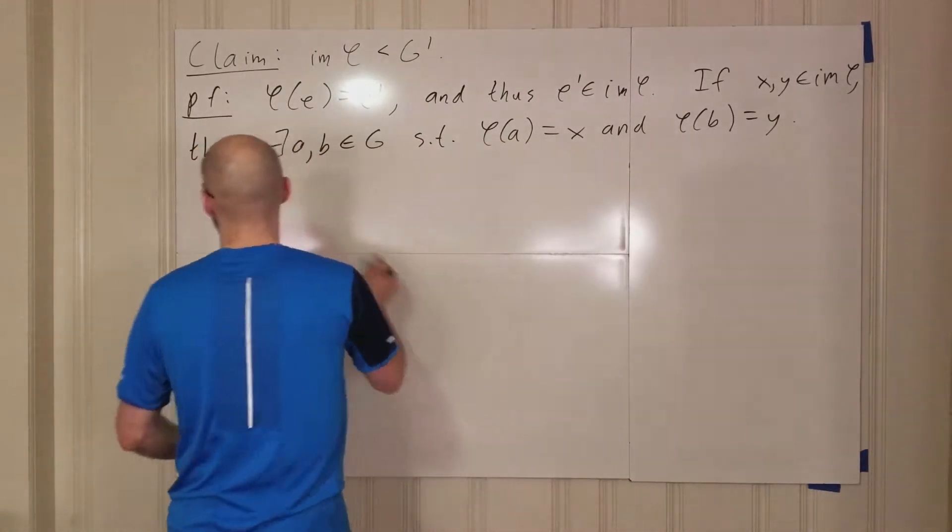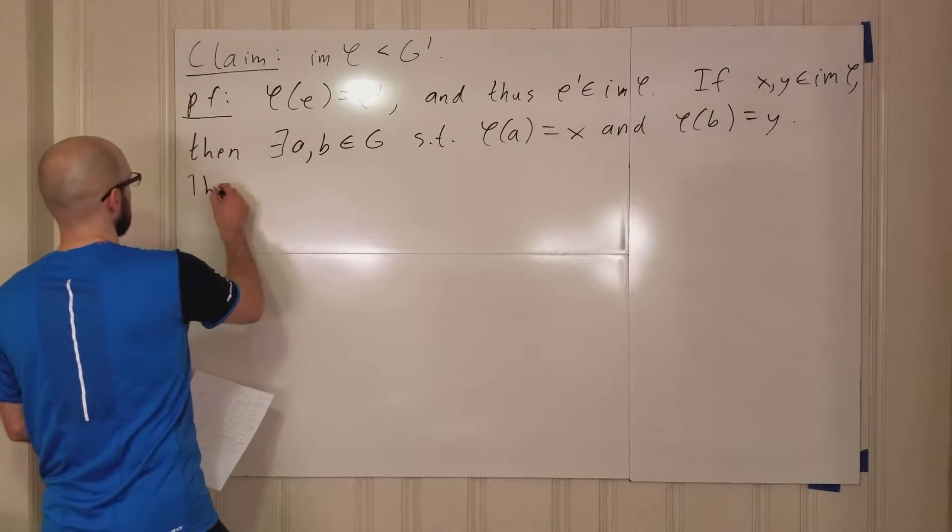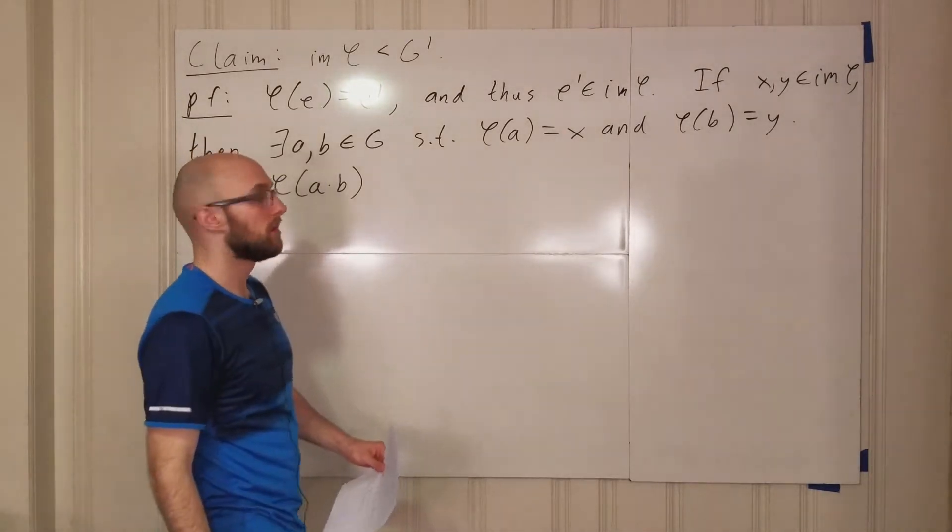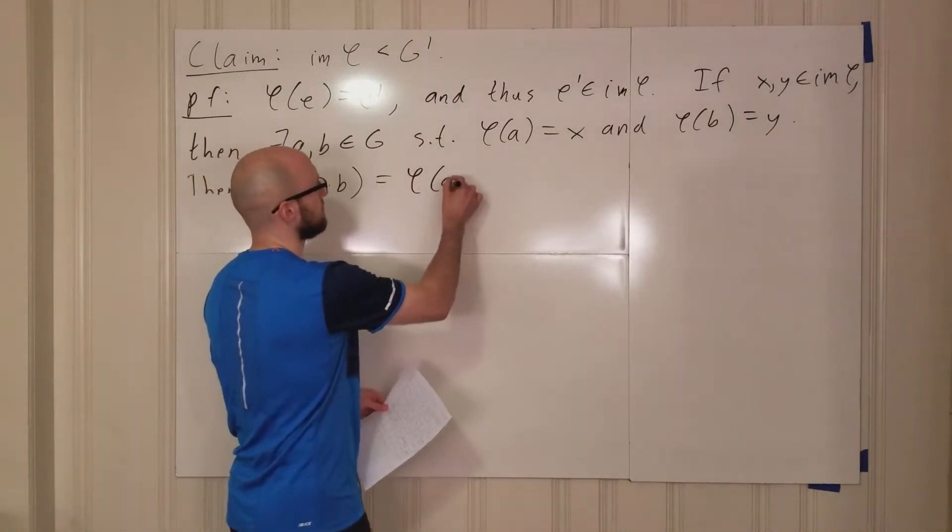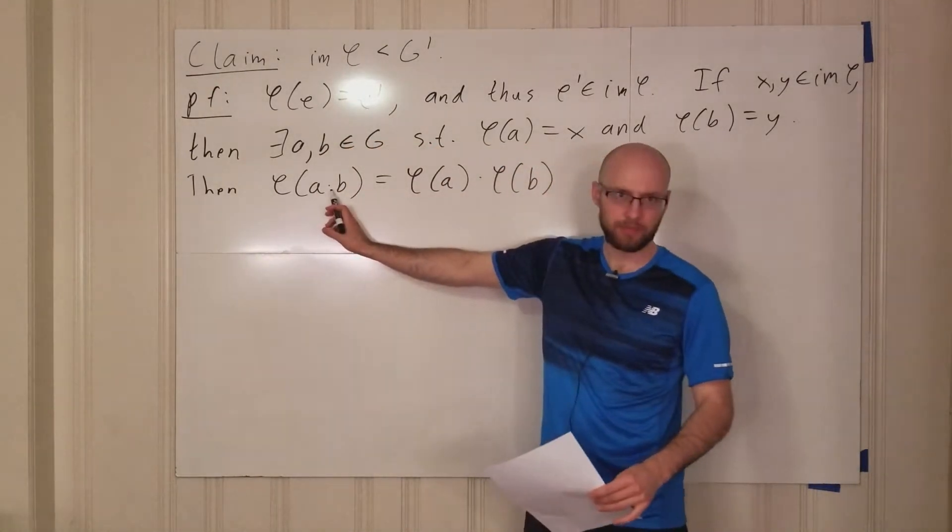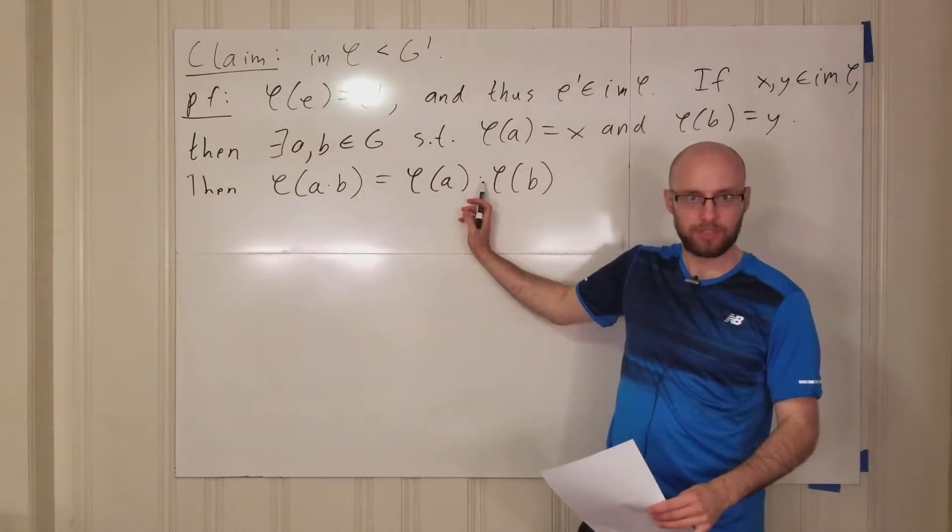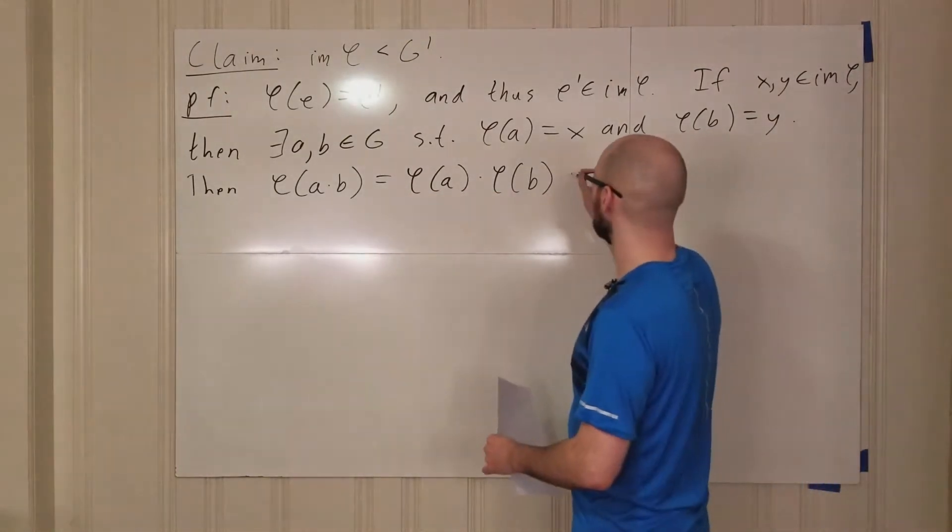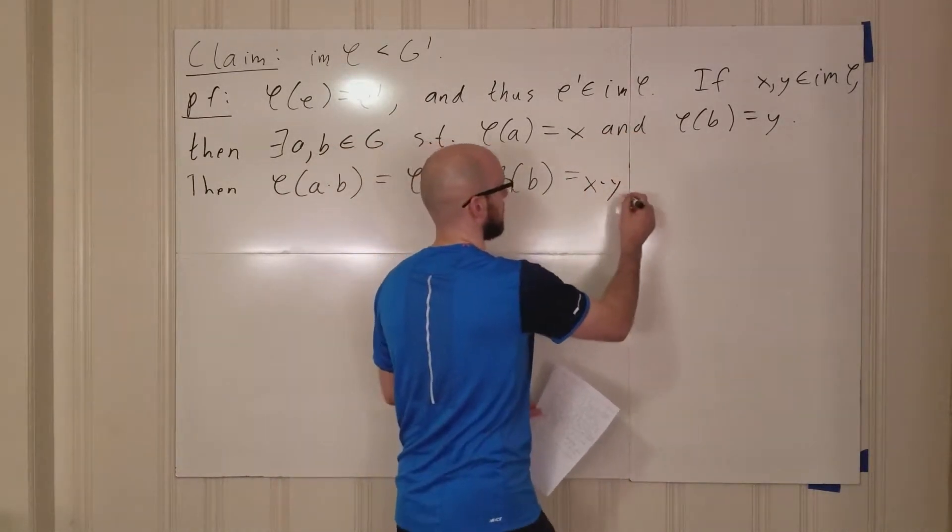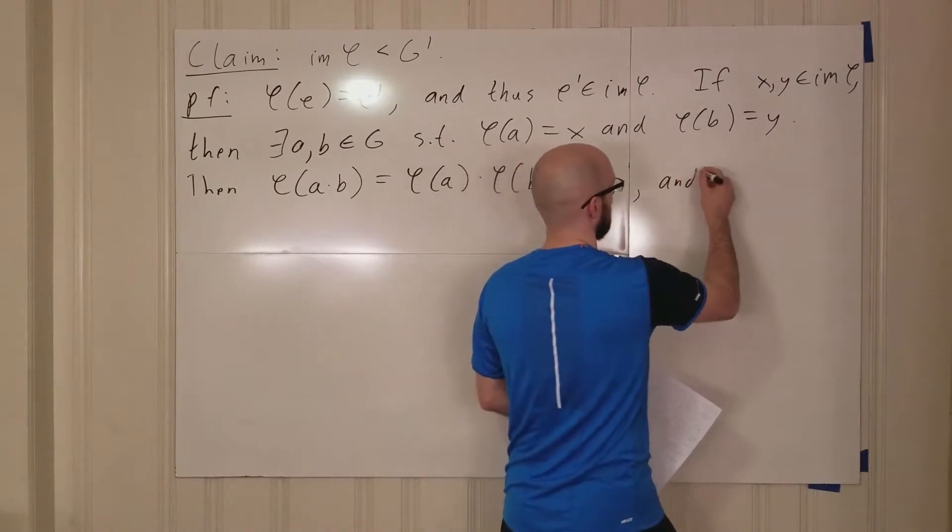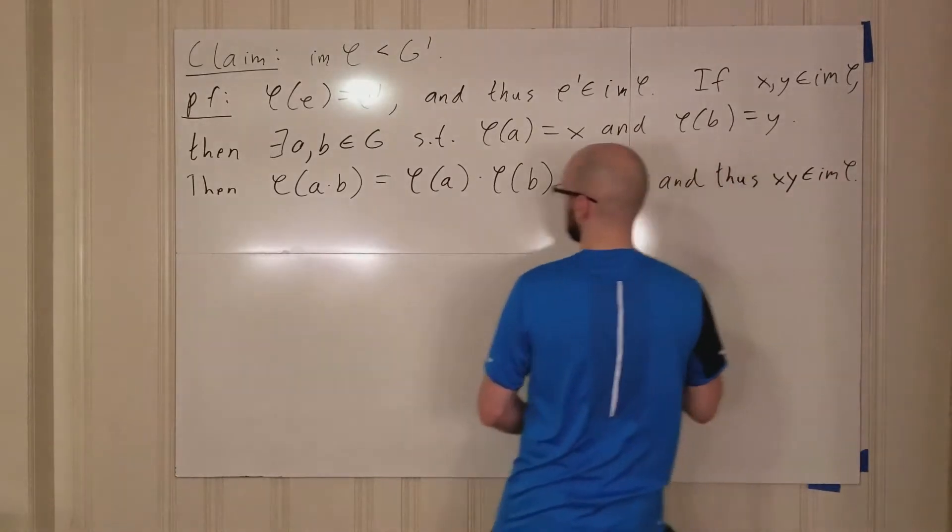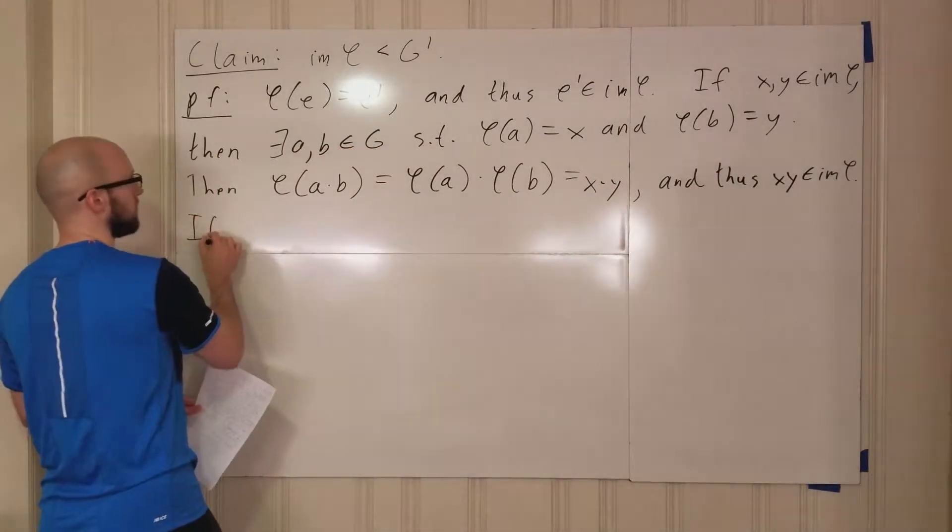So if we multiply them together, where will phi send those? Well, phi is a group homomorphism. So the phi of A times B is equal to phi of A times phi of B. Remember, this dot is multiplication in G. This dot is multiplication in G prime. So we have this equality and, oh hey, well, phi of A is X and phi of B is Y. So this is equal to X times Y. And thus, X times Y is in the image of phi.